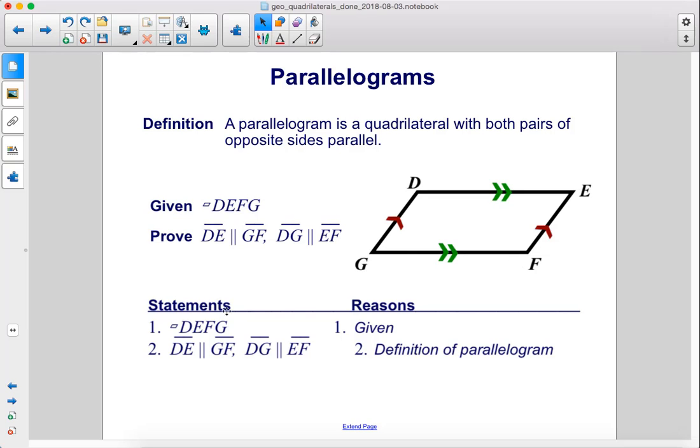So if we're given that this is a parallelogram, therefore DE is parallel to GF and DG is parallel to EF because that's the definition of a parallelogram.